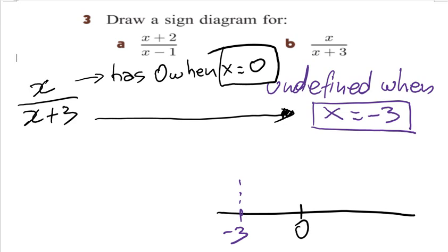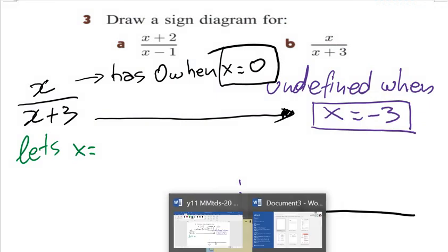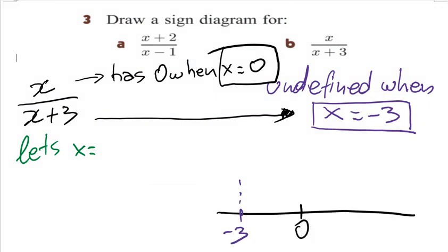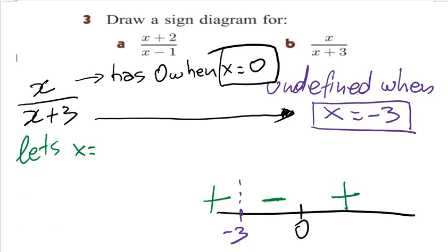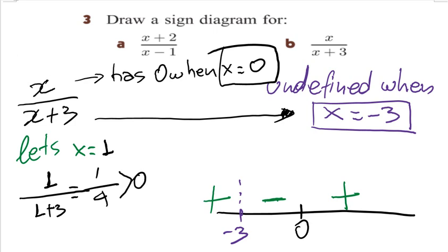Let's determine the values. Pick x = −1 in the middle region: that gives −1 over (−1 + 3) = −1/2, which is smaller than 0, so it's negative. Then the left region will be positive and the right region will be positive. Let's confirm: x = 1 gives 1/(1 + 3) = 1/4, which is larger than 0 — positive.